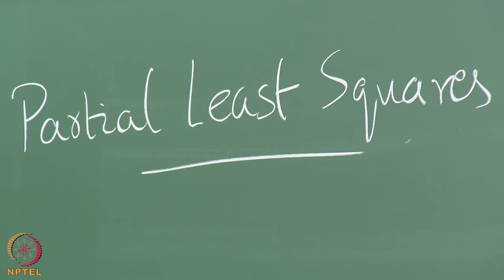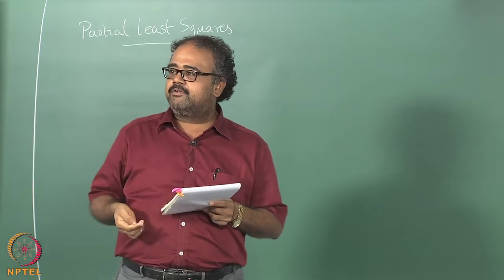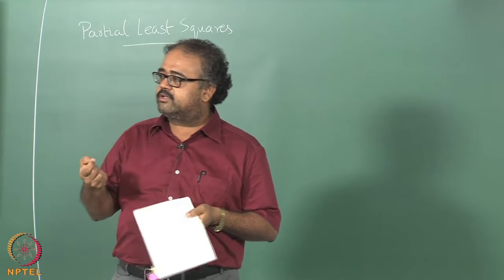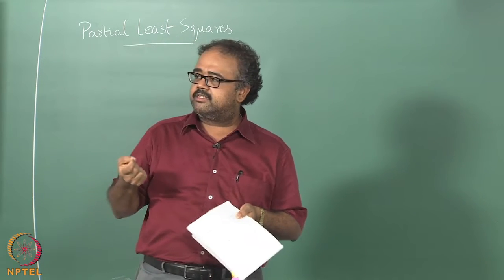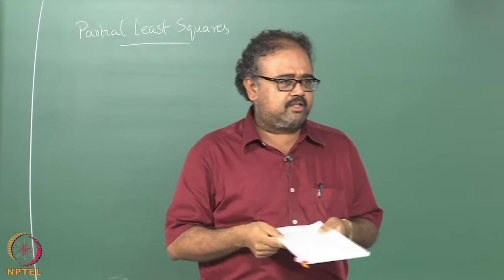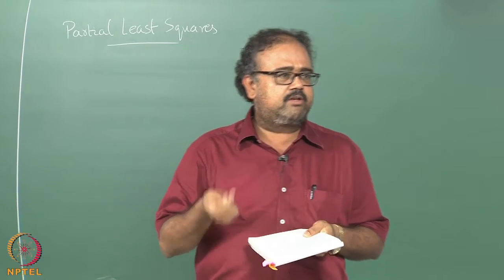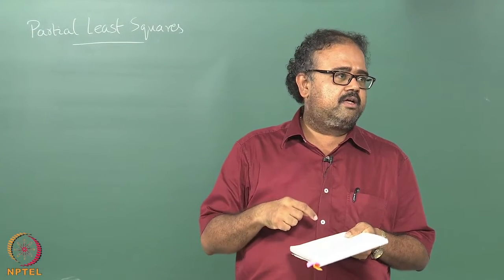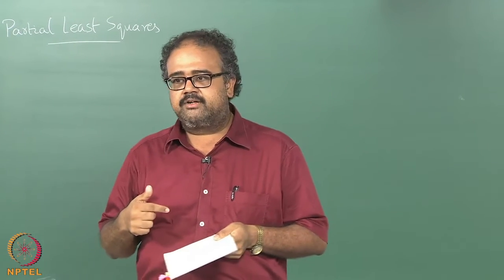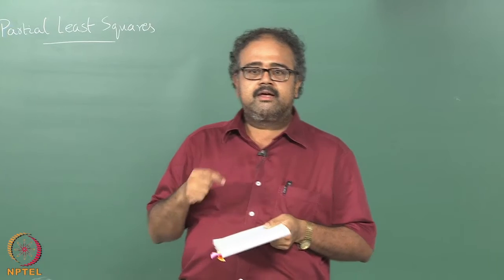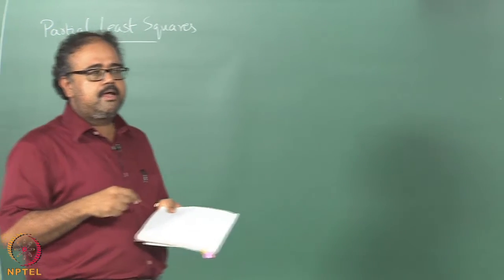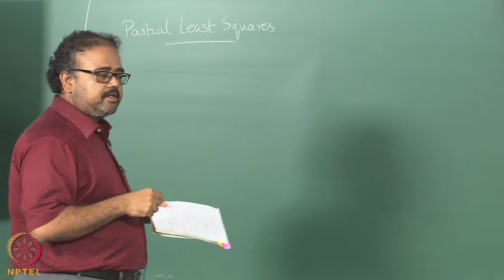There are three classes of methods and we are looking at a couple of examples of each. The first was subset selection — forward, backward, stagewise, stepwise selection — then shrinkage methods where we looked at ridge regression and lasso, and then we started looking at derived directions, specifically principal component regression.